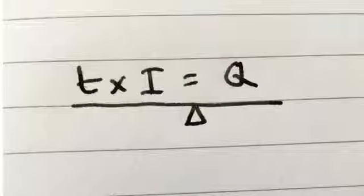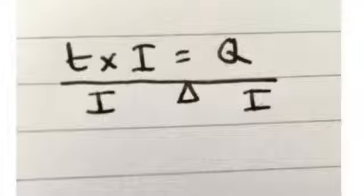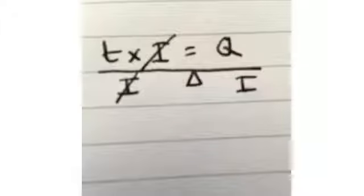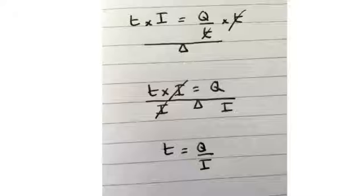We could imagine this as an equation balancing on our seesaw. Now let's divide both sides by I, because I want to get T all on its own. By dividing the left hand side by I, it means I can cancel I out and leave T on its own. But of course, to keep it balanced, I must divide the right hand side by I as well. And then this shows me that T is exactly the same as Q divided by I. The time is equal to the charge divided by the current.